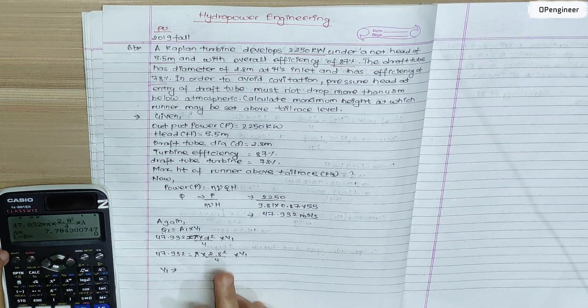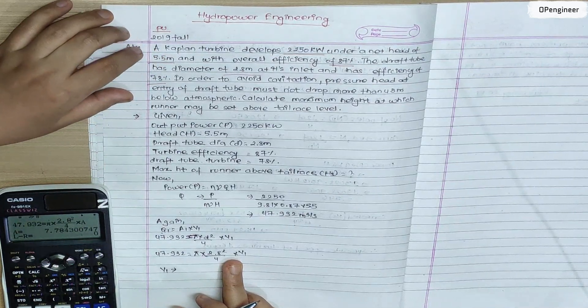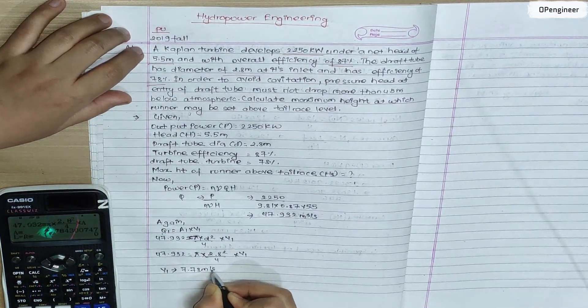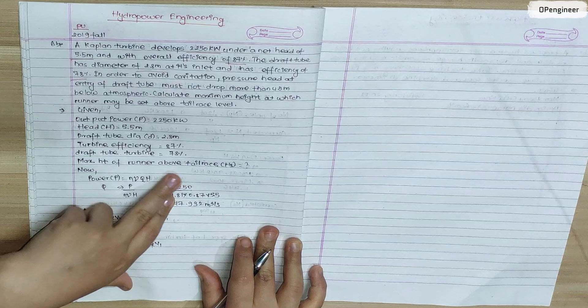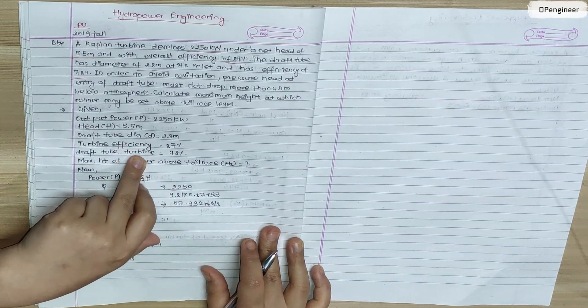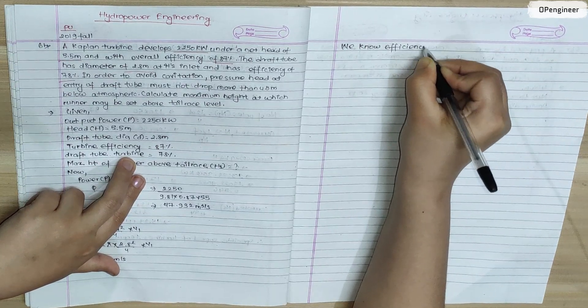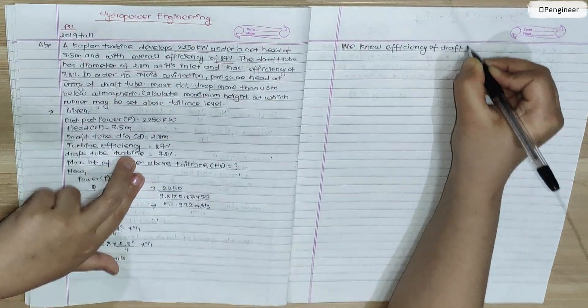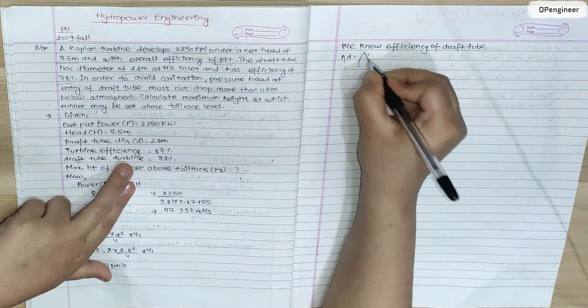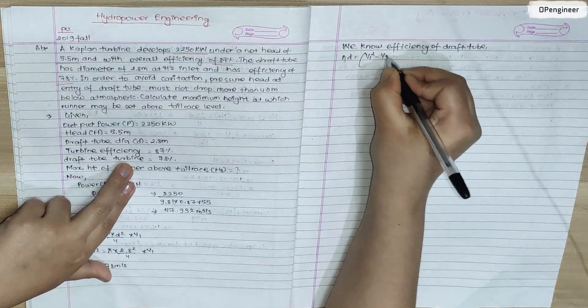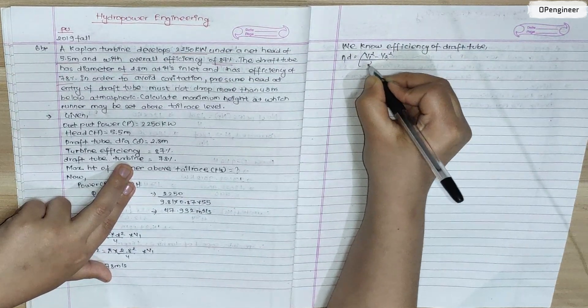Now I am going to calculate V2 using draft tube efficiency. We know efficiency of draft tube, this is the formula: η = (V1² - V2²) / V1². Simplifying, efficiency of draft tube is 78%.